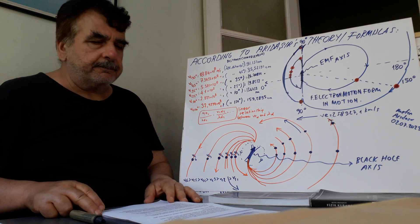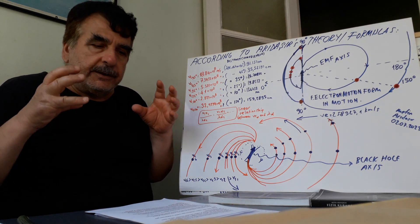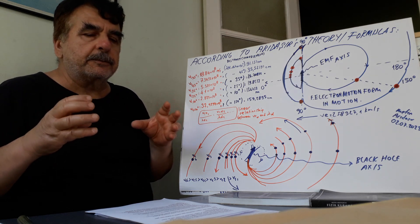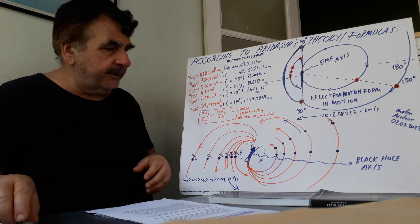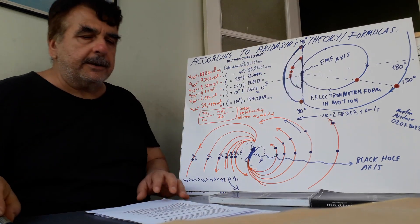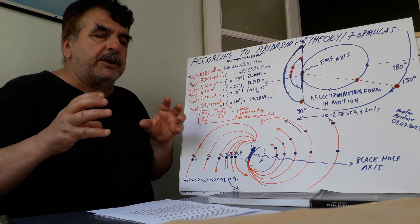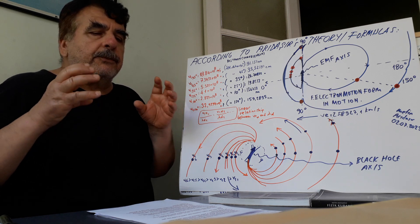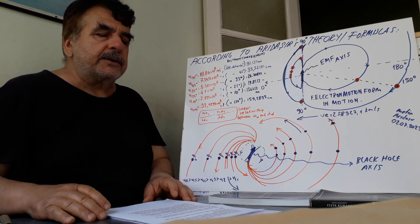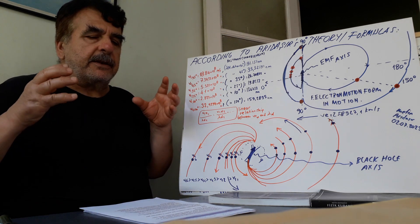Eventually, when a photon orbits around an electron motion form's or black hole's axis, as the distance between them decreases, the photon's linear velocity or orbital velocity decreases, and its mass and energy increase.